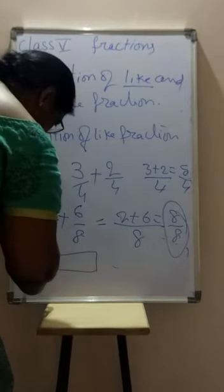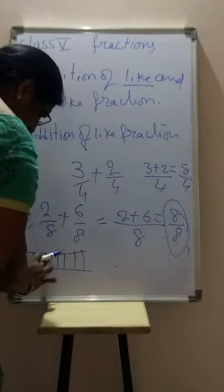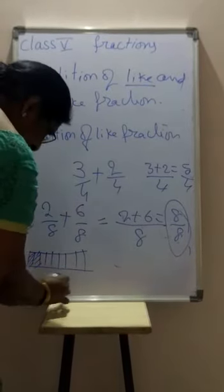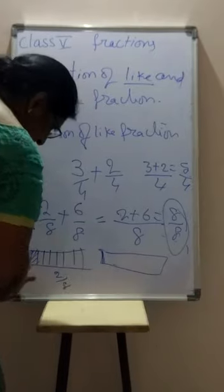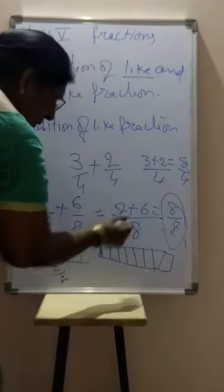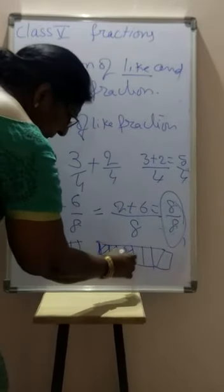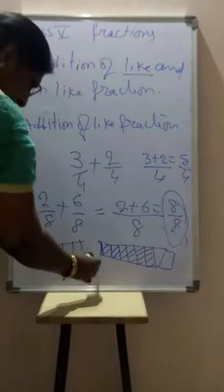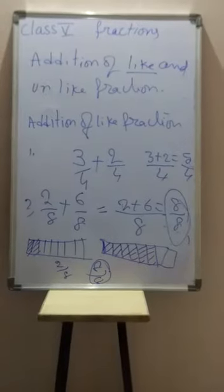To understand this visually: divide a strip into 8 parts and take 2 — that is 2 by 8. Take another strip of the same length, divide into 8 parts, and take 6 — that is 6 by 8. Together you have taken 8 out of 8 parts, so 2 by 8 plus 6 by 8 equals 8 by 8, which equals 1.